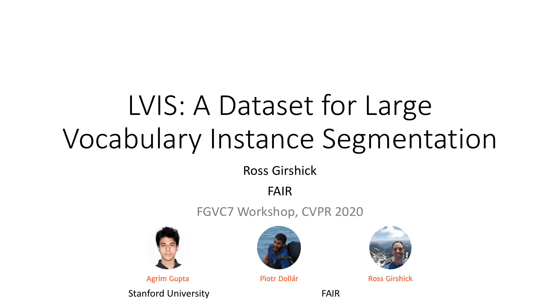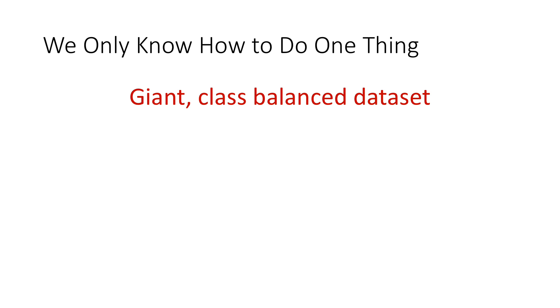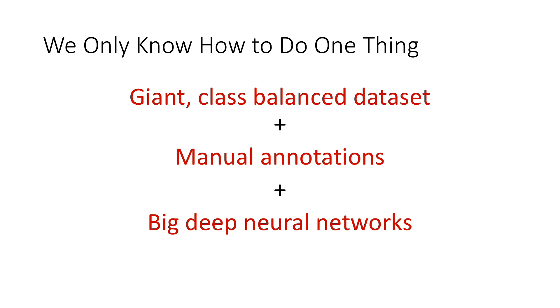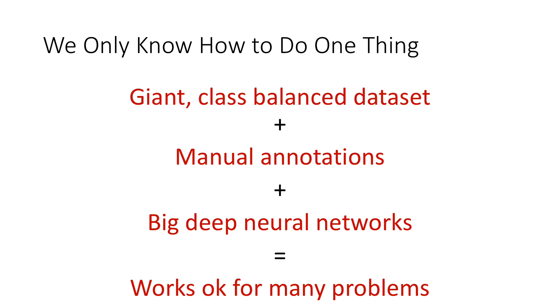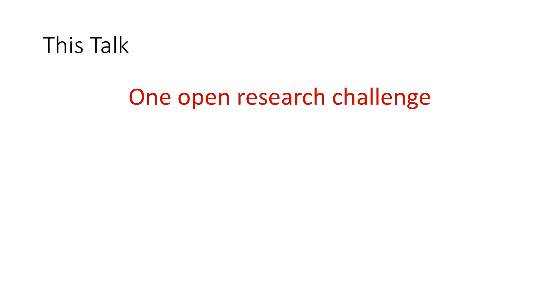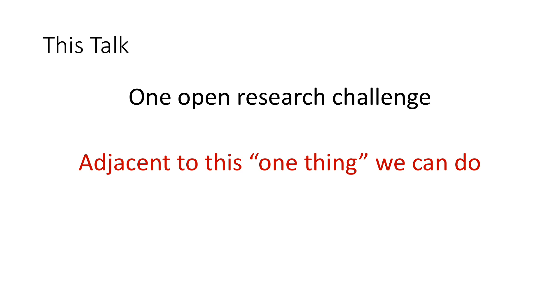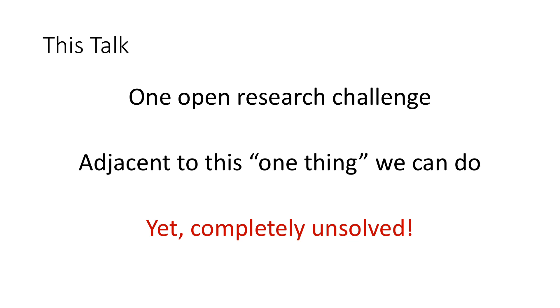This topic is not exactly about fine-grain recognition, but I think it overlaps well in terms of some of the open scientific challenges, and I thank the organizers for the opportunity to present this work. I'll start by saying that in machine learning, we basically only know how to do one thing: take a giant class-balanced dataset with a lot of manually curated annotations, and then train a big deep neural network on those annotations. For many problems, this works well enough to build systems that do useful things in the world. This talk is about one open scientific research challenge that's really close to that one thing we can do pretty well, but it's also far from being solved. I think this juxtaposition illustrates that there is something fundamentally missing from our current approaches, and I hope it will inspire researchers to pursue this problem.